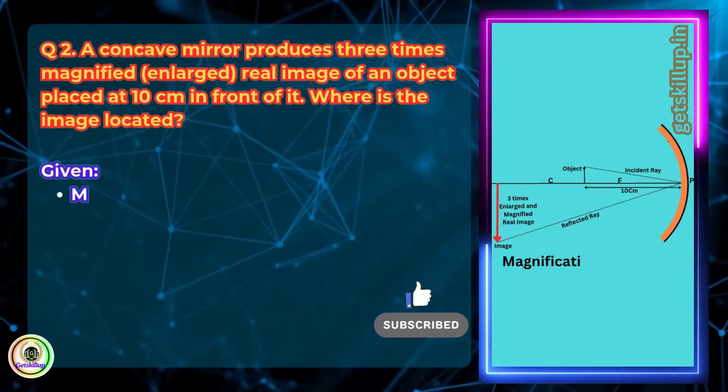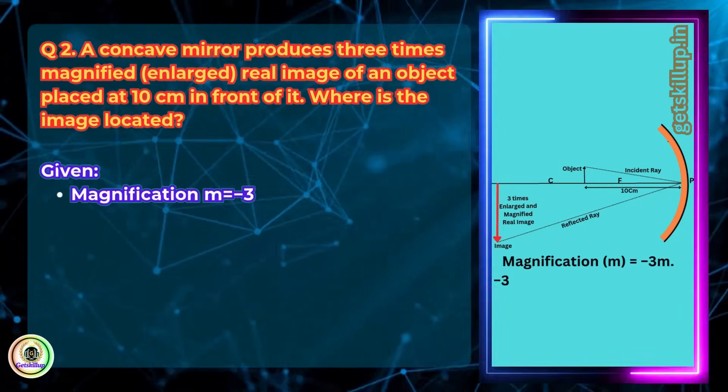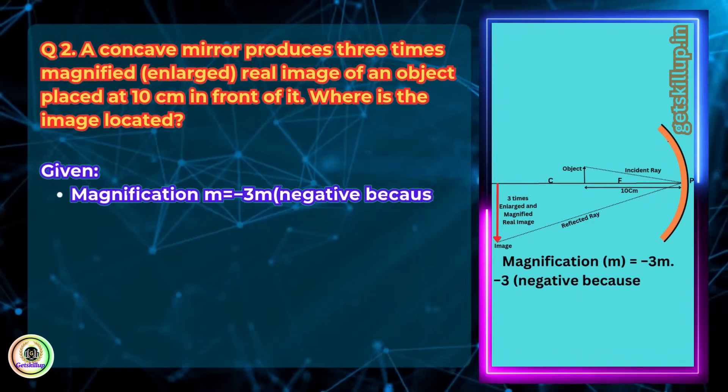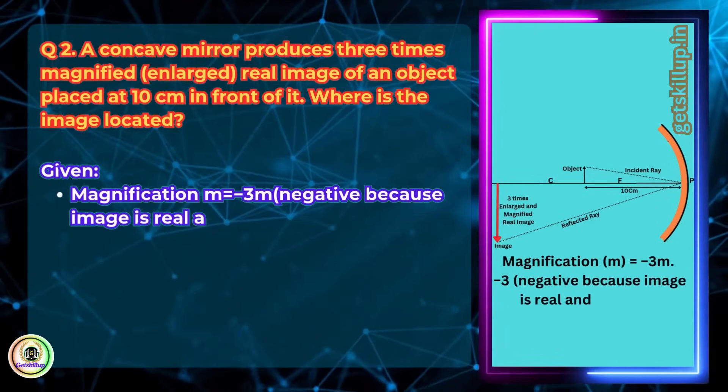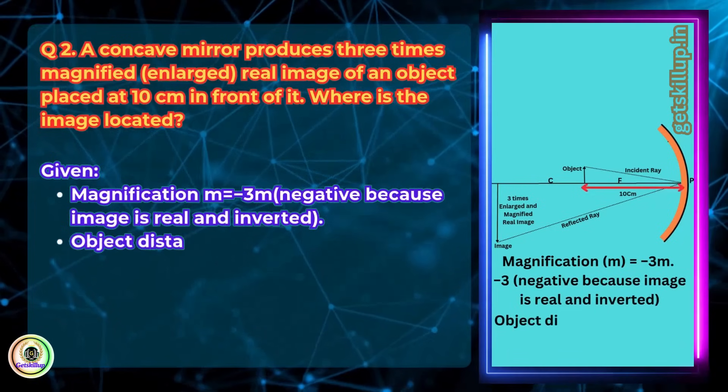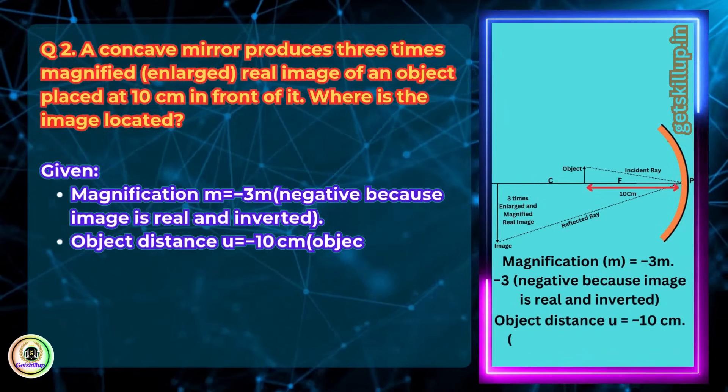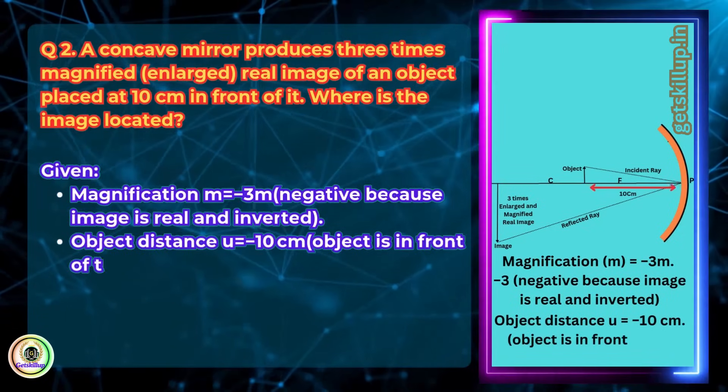Given. Magnification m equals minus 3, negative because image is real and inverted. Object distance u equals minus 10 cm. Object is in front of the mirror.